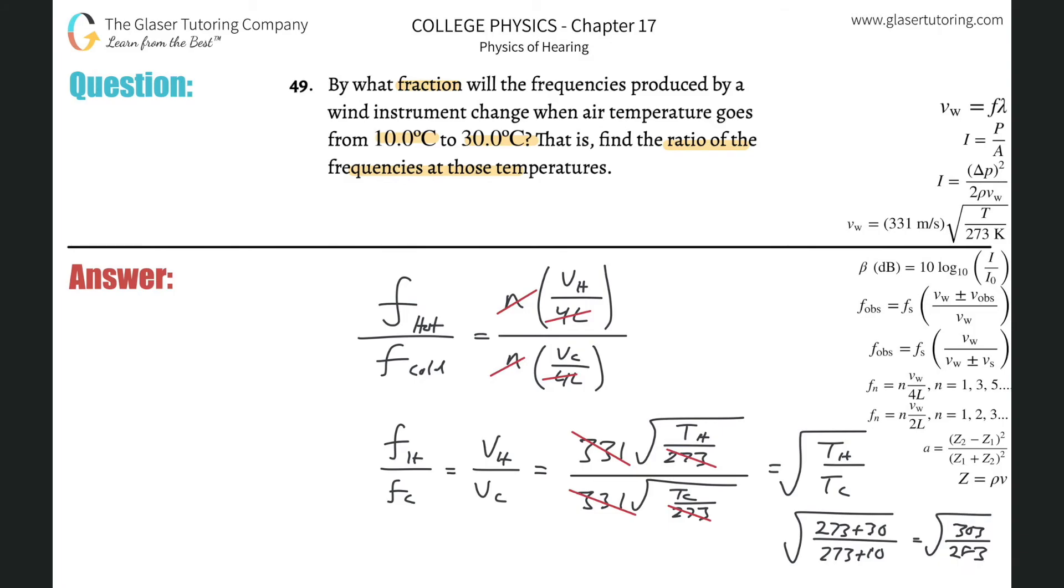So you cannot just look at this and say, 'This is Celsius on the top, this is Celsius on the bottom, the units would cancel, so it's just a ratio.' It doesn't work. Just be careful there. So we have the square root of 303 over 283.